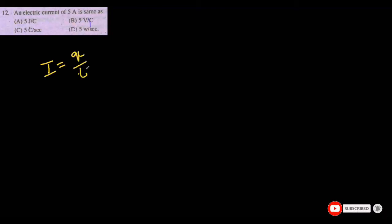An electric current of 5 ampere is the same as — as I already discussed, current is equal to charge per unit time. So 5 ampere current is equal to 5 coulombs per second, so option C is the correct answer.